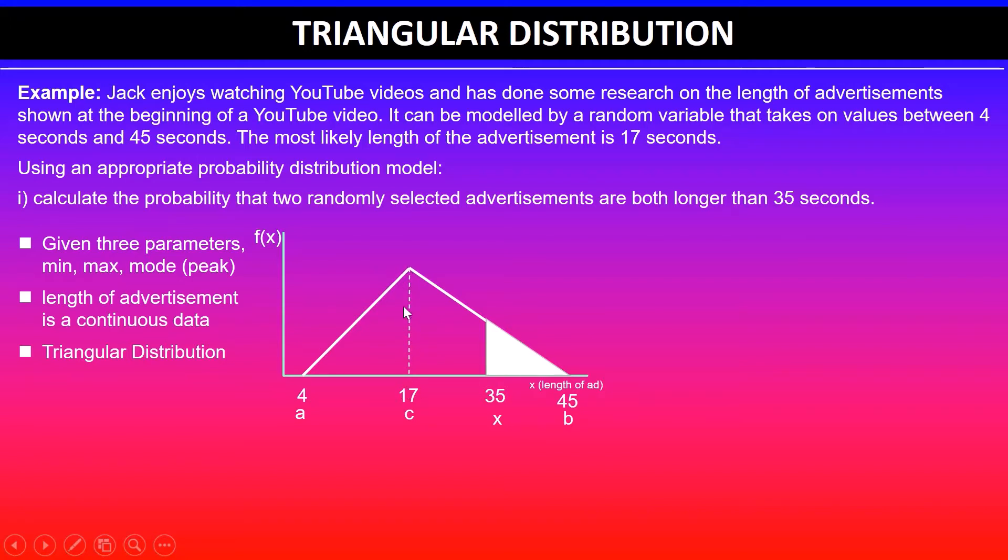We can find the maximum height which is h in this case, and I will label the unknown height here as h dash. The maximum height is given by 2 over b minus a.